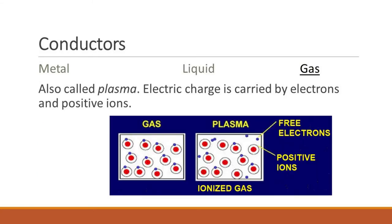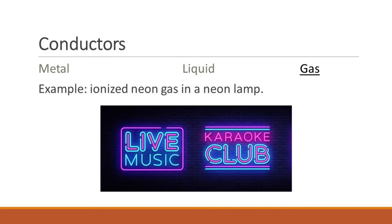Lastly, we find conductors in the state of gas. They are also called plasma. In this case, electric charge is carried by electrons and positive ions. Examples of conductors found as gas is the ionized neon gas in a neon lamp.